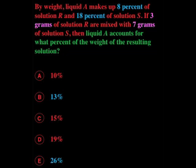We have 3 grams of solution R and 7 grams of solution S. If we make the mistake of adding 3 and 7, we get 10. There it is. It's an answer, but it's a wrong answer.